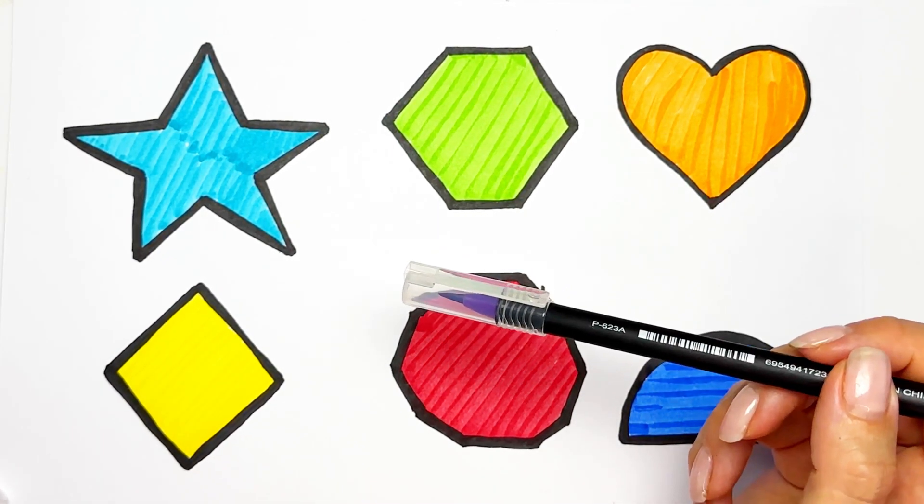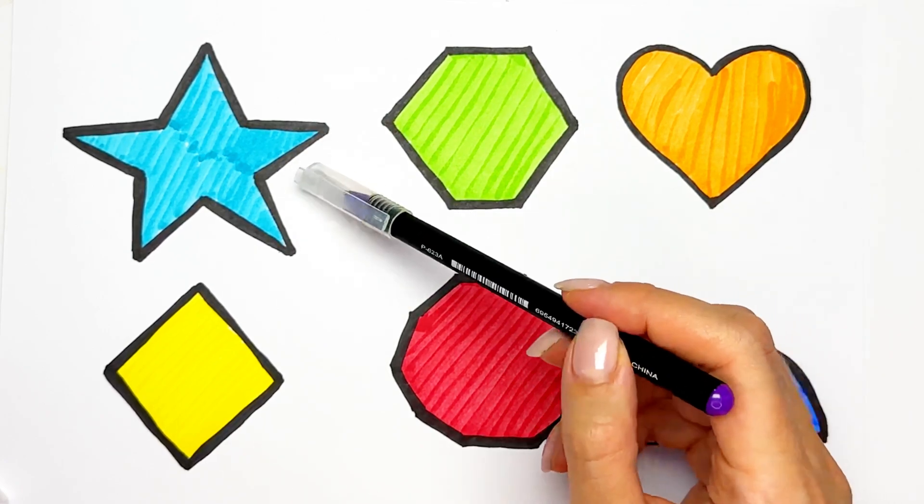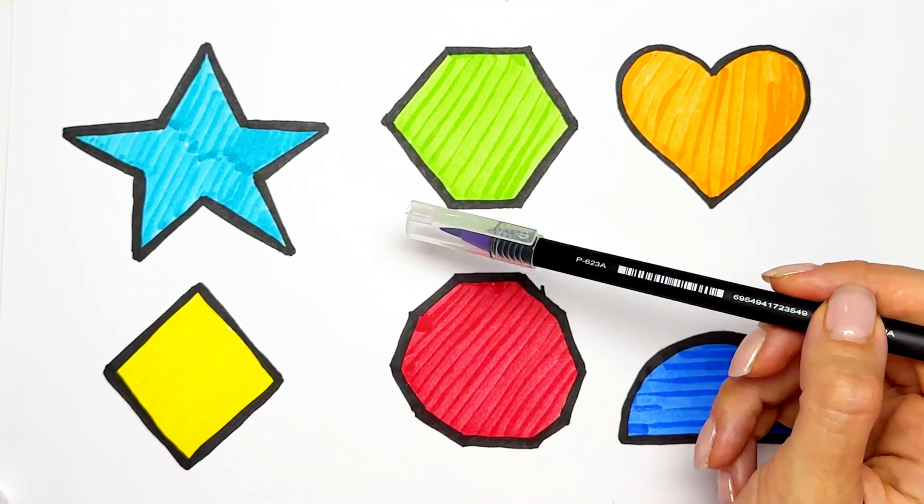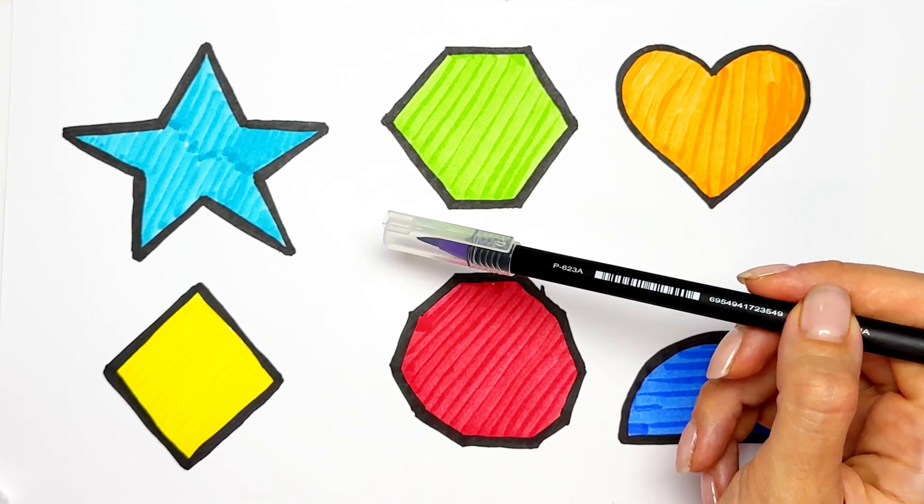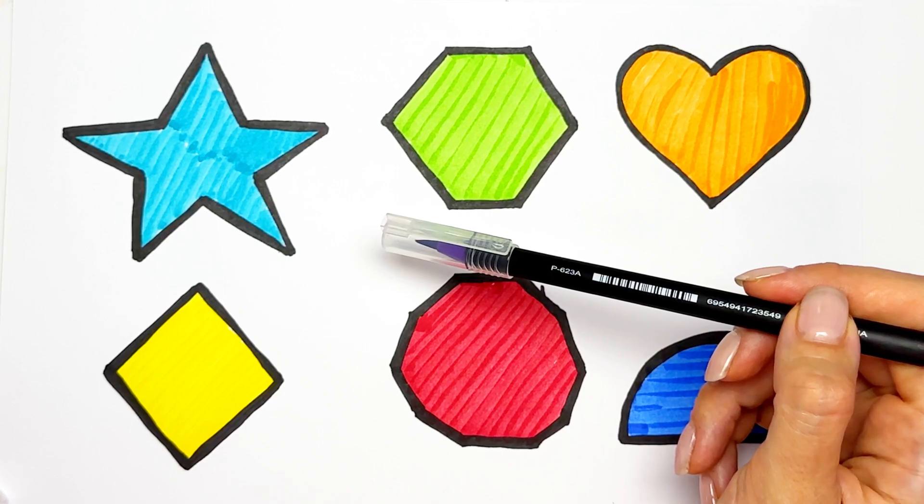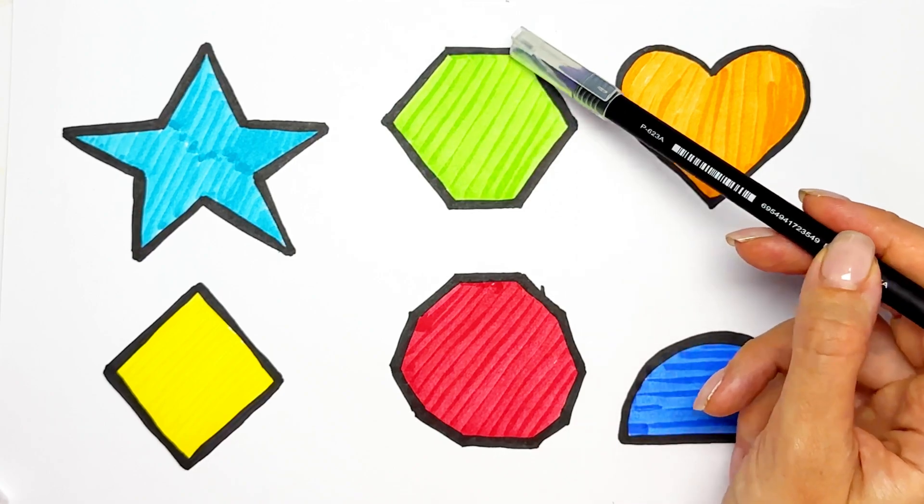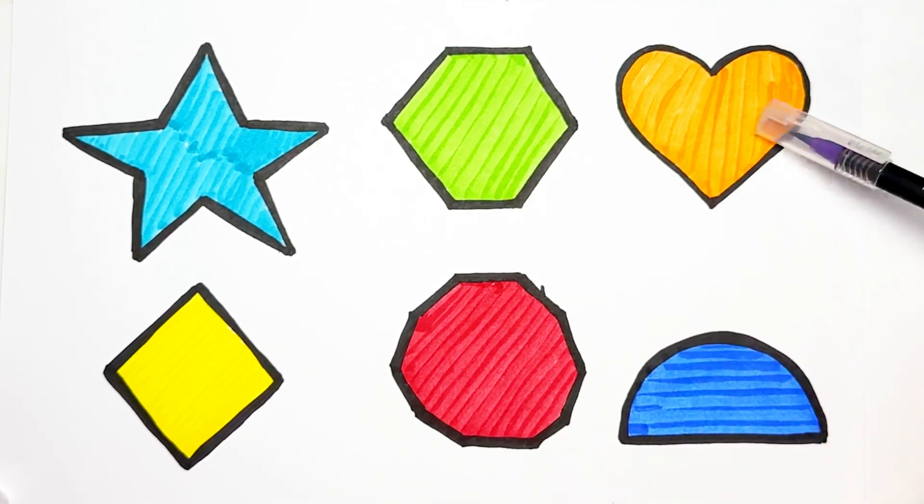So we have a star. Star has 5 rays. One, two, three, four, five. We have hexagon. Hexagon has 6 angles. One, two, three, four, five, six. Heart.